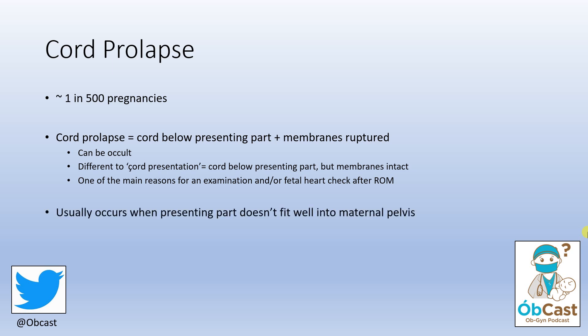There are lots of risk factors for cord prolapse. Some examples might be a head that's not well engaged at the time of ruptured membranes, excessive amniotic fluid, or a presentation such as a footling breech where the presenting part doesn't fit well into the maternal pelvis. It can be iatrogenic and can occur at the time of artificial rupture of membranes, but obviously that's not something we'll be doing in the emergency department.